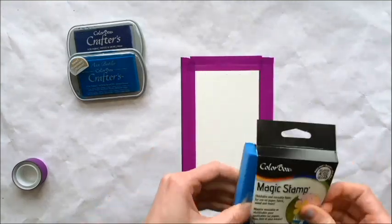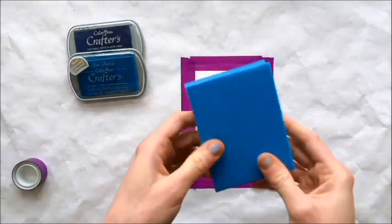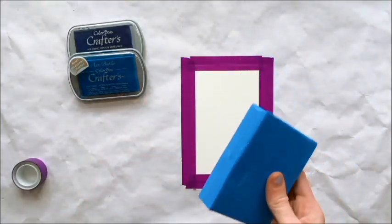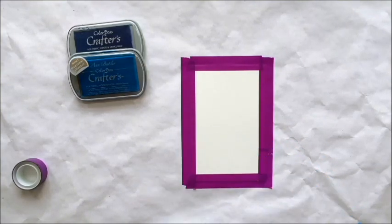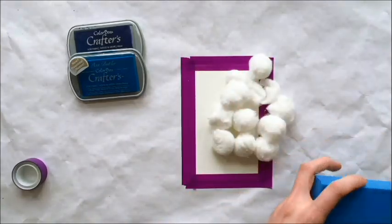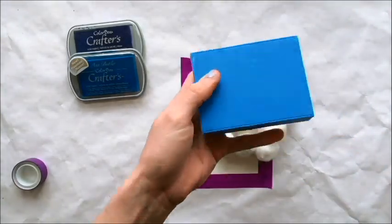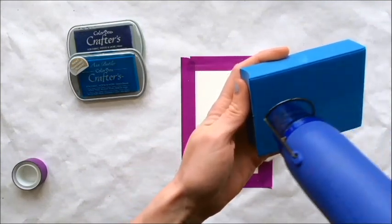I'm going to remove the Magic Stamp from the packaging. Basically, what you're going to do to warm this up is take a heat gun and run it over the surface of the foam until it is nice and hot.